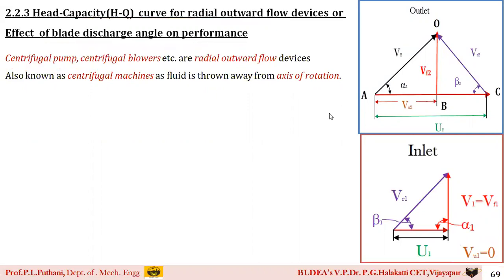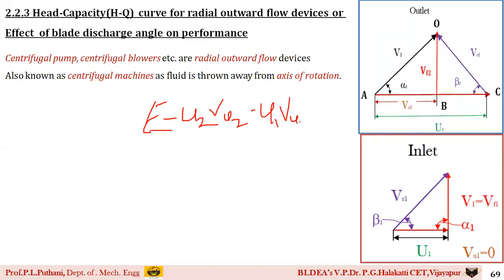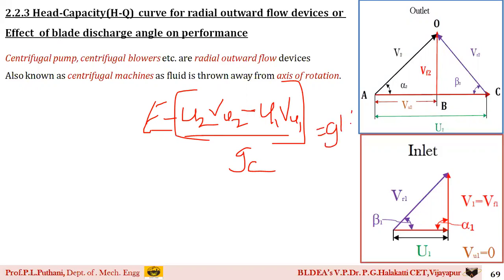These radial outward flow devices are power-absorbing machines. The energy equation for a power-absorbing machine is written as: E = (U2·VU2 − U1·VU1) / gc. We write this energy transfer for a power-absorbing machine, so U2 comes as the first term. In terms of head, this is equal to gH, or in terms of enthalpy: ΔH0 = E = gH = (U2·VU2 − U1·VU1) / gc.